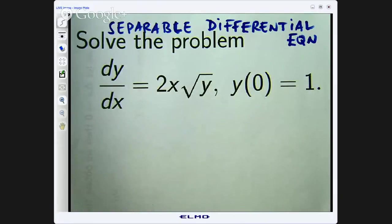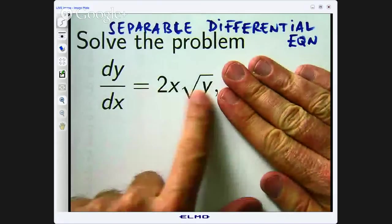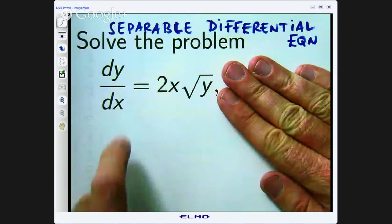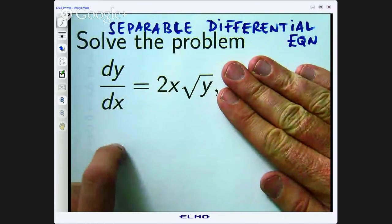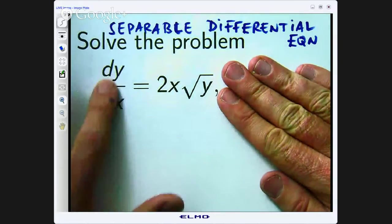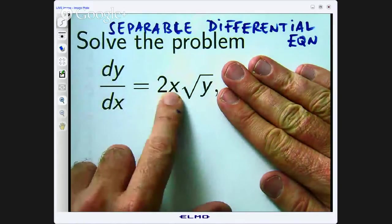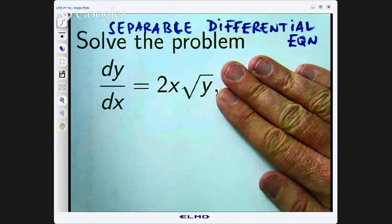So let us just read this out loud. If I am just looking at this differential equation here, I want to find the function y whose derivative is 2 times x times the square root of that function.